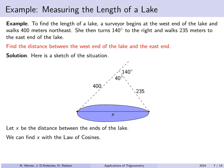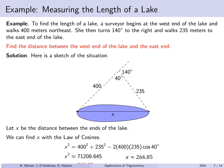We find the other side using the law of cosines. Specifically, x squared equals 400 squared plus 235 squared minus 2 times 400 times 235 times the cosine of 40 degrees. In general, the law of cosines has as the single squared term the side across from the angle used. Since we're looking for the side across from 40 degrees, we compute: x squared is about 71,000 and some change. Taking the square root, x is approximately 266.85 meters.